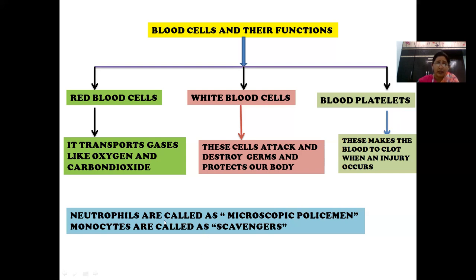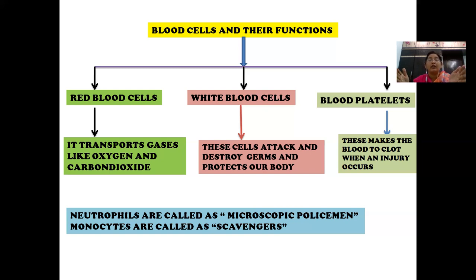Neutrophils are called microscopic policemen because they are observed under the microscope and they protect our body from bacteria. Monocytes, a type of WBC, are called scavengers. A scavenger is one who cleans the dirt or unwanted substances. Monocytes remove all dead bacteria, dead RBCs, and dead cells, keeping our body clean. So monocytes are termed the scavengers of our body.